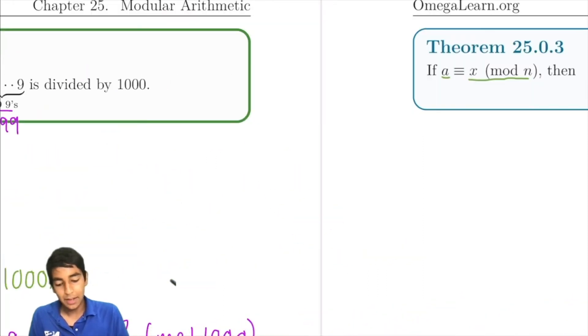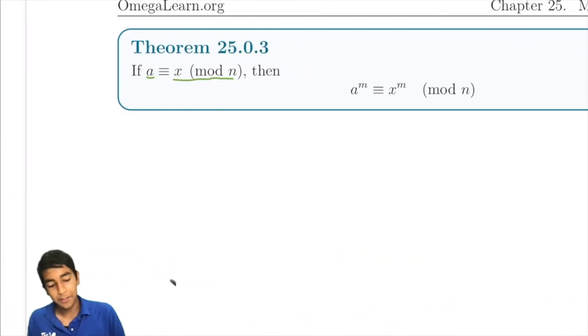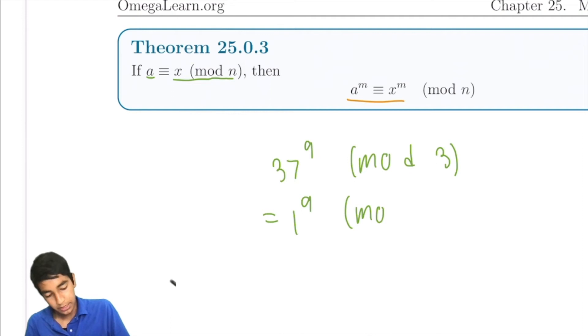Cool trick, but like I mentioned earlier, we have this cool property. For example, let's say we have to find 37 to the power of 9 mod 3. This is just equal to 1 to the power of 9 mod 3. Why? Or equivalent to? The three lines means equivalent to, so it's not the same as equal to, for sure.